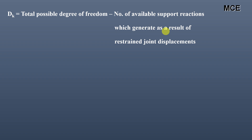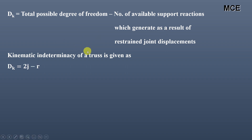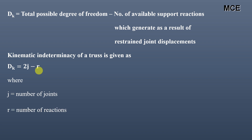In the context of the truss, kinematic indeterminacy is given as: dk = 2j − r, where j is the number of joints and r is the number of reactions. This is the formula to find the kinematic indeterminacy of a truss. Now we will solve some relevant examples to better understand the concept.